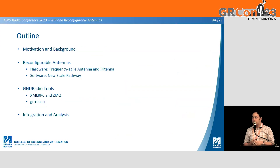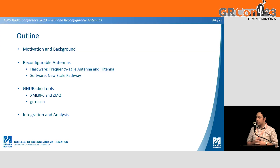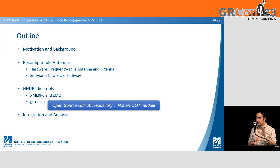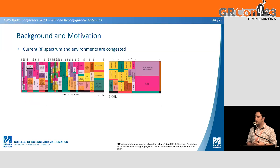A quick outline: motivations and background concepts, a little about what they're doing in Oklahoma with the reconfigurable antennas, some of the hardware they've built and the software they use to control it. Then some of our work with GNU Radio — primarily XMLRPC, ZMQ, and GR Recon, which is not an out-of-tree library but our open source GitHub repository with scripts and code tied to this project. And I'll talk about the integration and how we're bringing these two things together to build a test system.